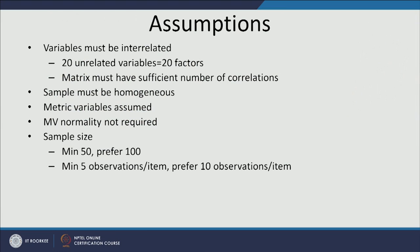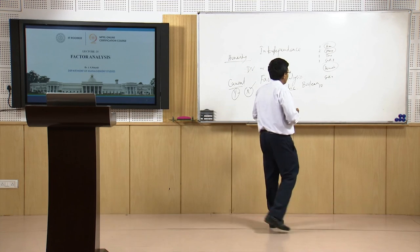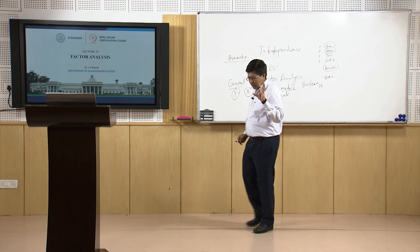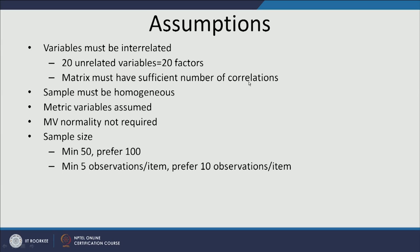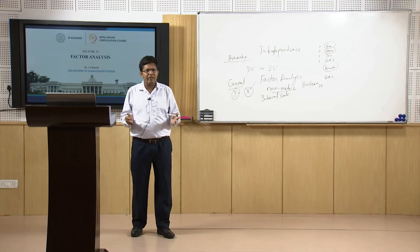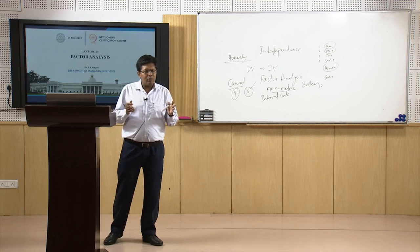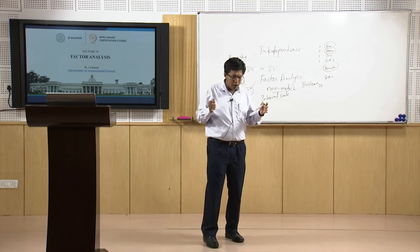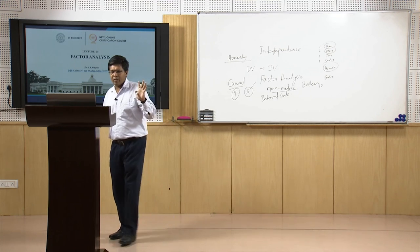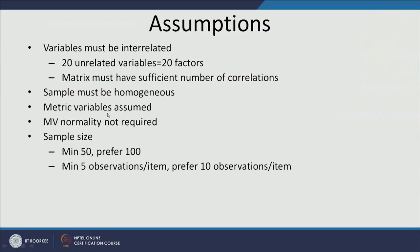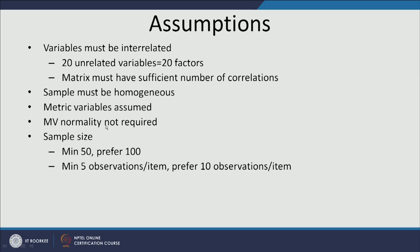What are the assumptions in factor analysis? Basically, the variables must be related — when conducting factor analysis, there must be some degree of correlation among items within the factor. There is a Bartlett's test of sphericity which we want to be significant, meaning there is correlation among the variables. Variables are assumed to be metric. Multivariate normality is not an important condition — if it is not there, it does not make much difference.